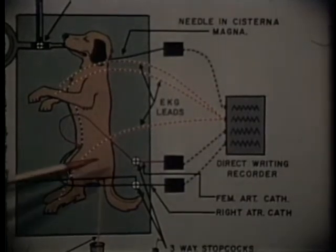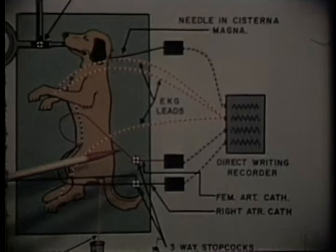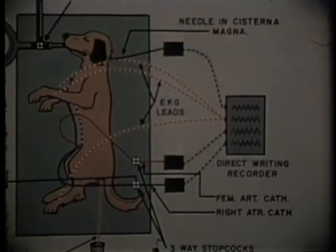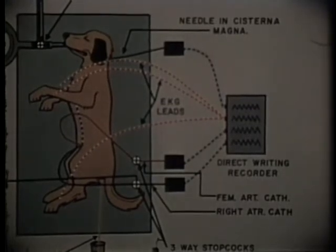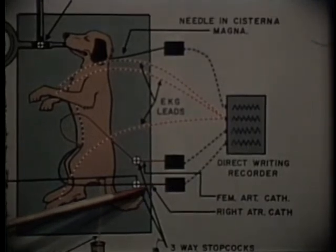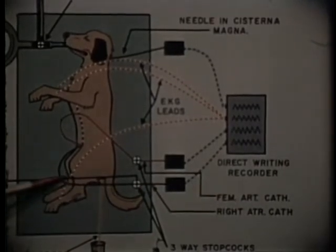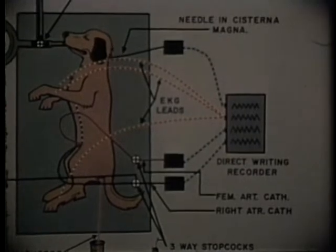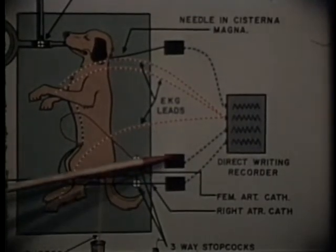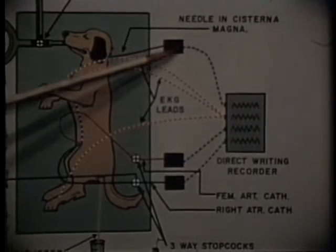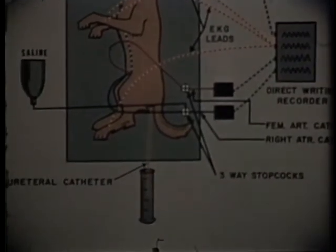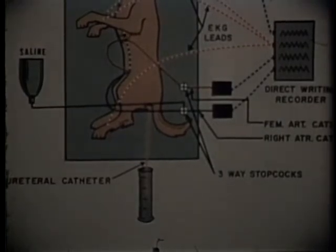The three-way stopcock in the arterial line permits samples to be taken for pH, pCO2, carbon dioxide content, catecholamines, and oxygen saturation. Intrathoracic venous pressure is measured through a plastic catheter inserted through the femoral vein and passed up into the chest. All pressure measurements are made by pressure transducers and recorded with the electrocardiogram on a four-channel recorder. The urethral catheter leads to a graduated flask for measurement of urine excreted.